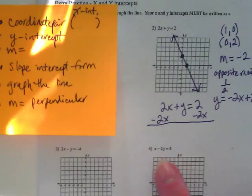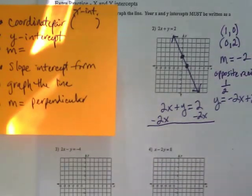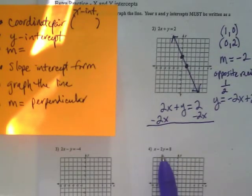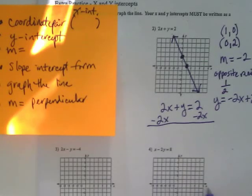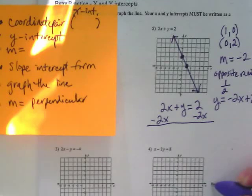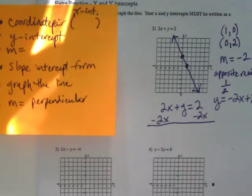I will warn you, number four, the x-intercept ends up off the graph to the right a little bit. Look at it right now. If I put in a zero for the y, I'm going to get x equals what? And that's going to end up about here. Just do your best to guess. All the rest of them fall somewhere on the graph. That's the only one that's off of it a little bit.